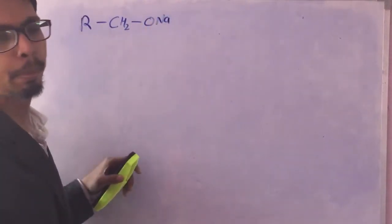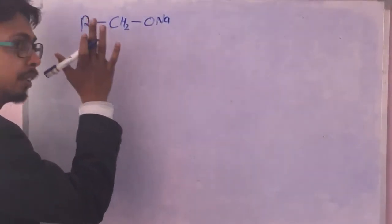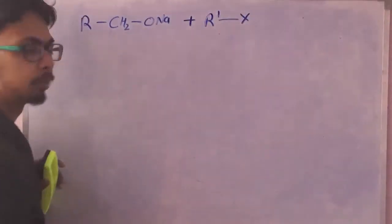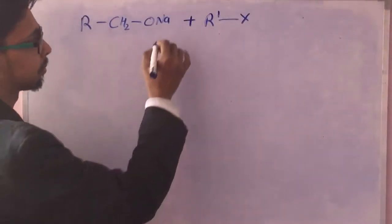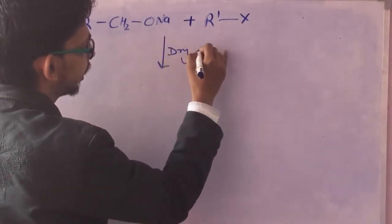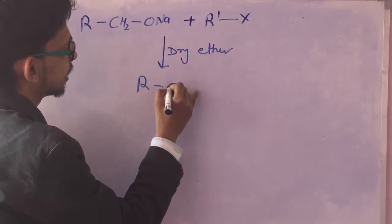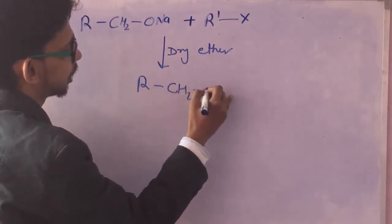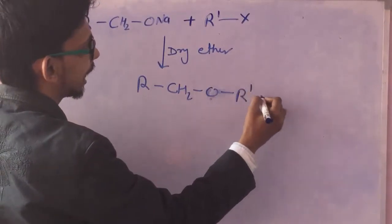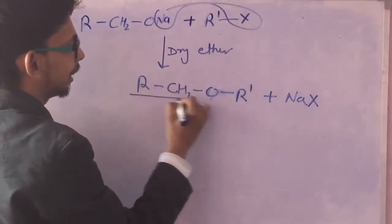This sodium alkoxide is prepared by reaction of sodium metal with alcohols, and when we react it with another alkyl halide in dry ether, we get R-CH2-O-R' plus NaX. This is how we get an ether.